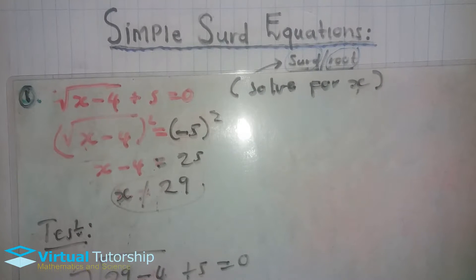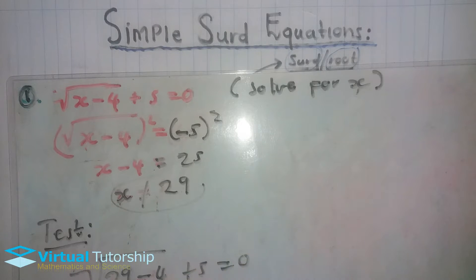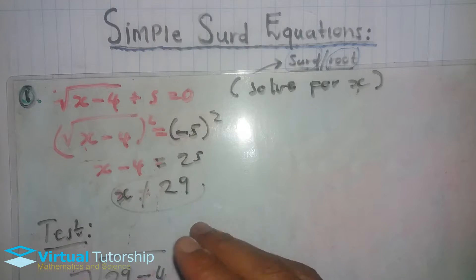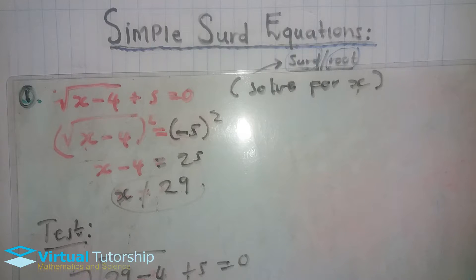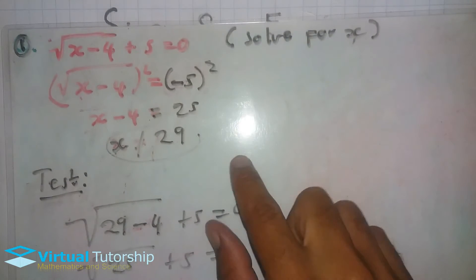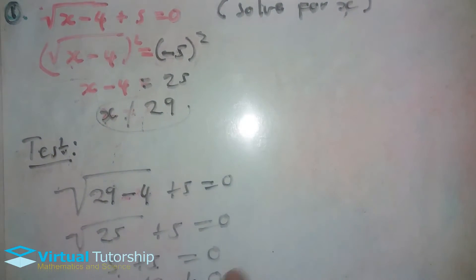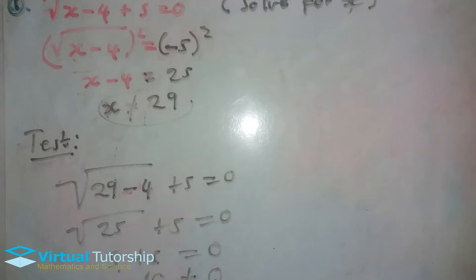So this equation has no solution. This is why it's always a good idea to check your solution by substituting back into the original equation — sometimes the process of squaring both sides introduces answers that are not actually roots of the original equation.